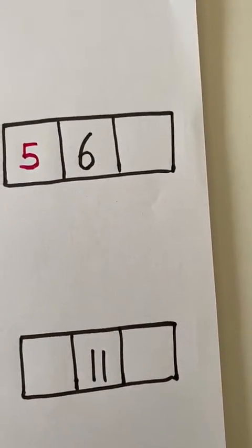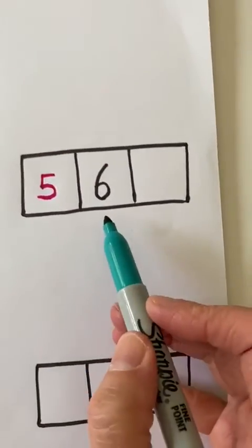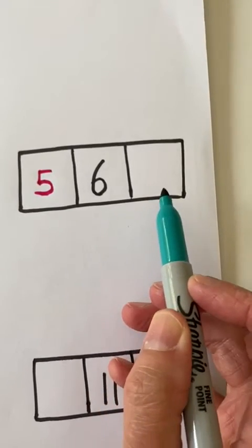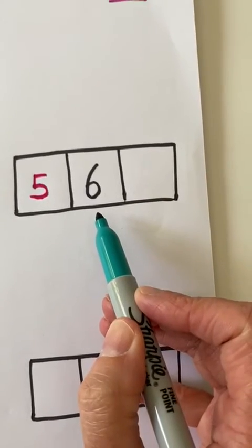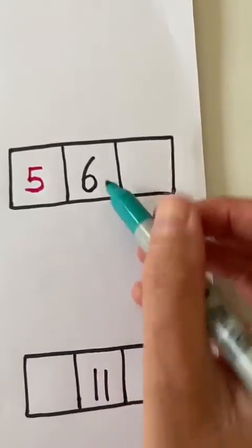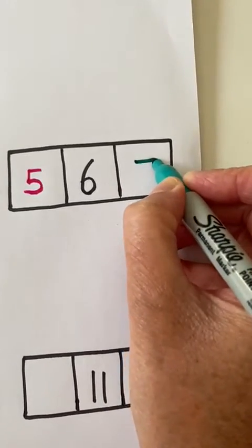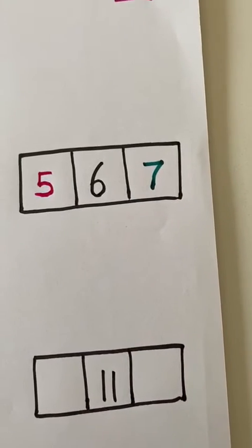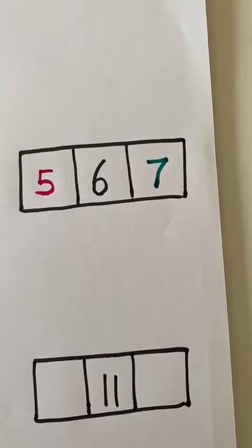One less than six is five. But now what is one more than six? What number comes after six? It's number seven. So one more than six is seven.